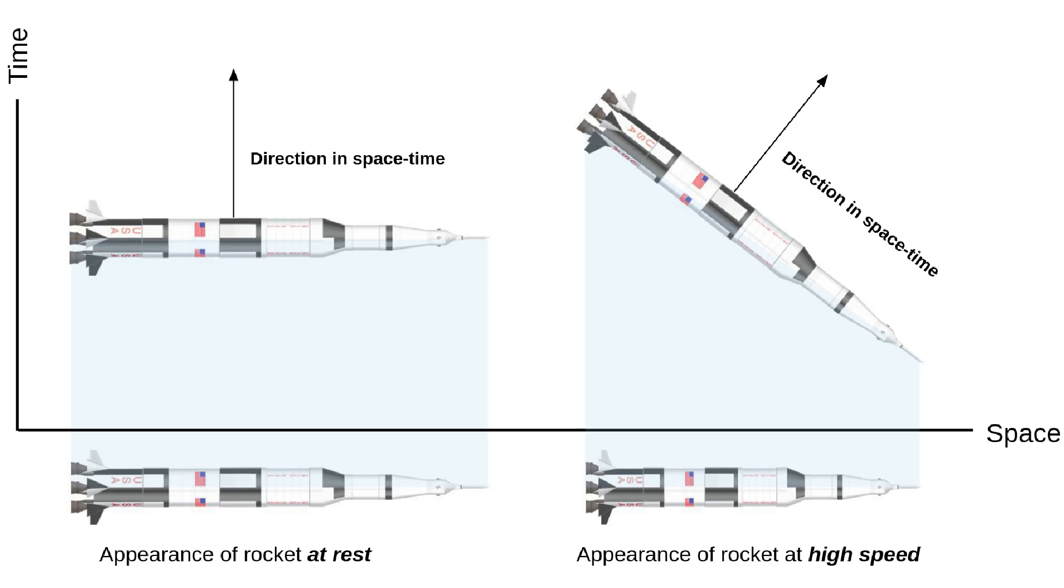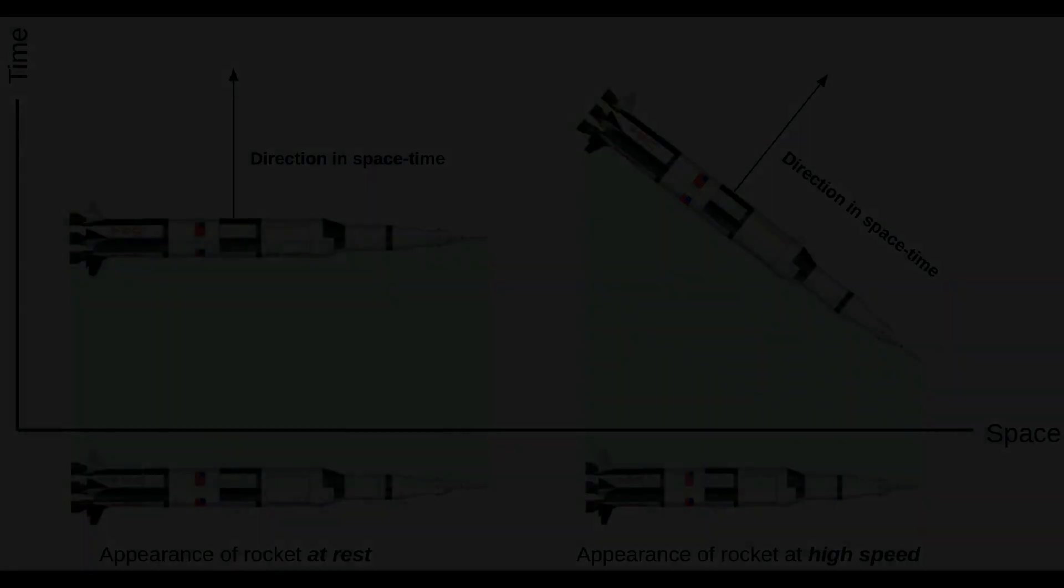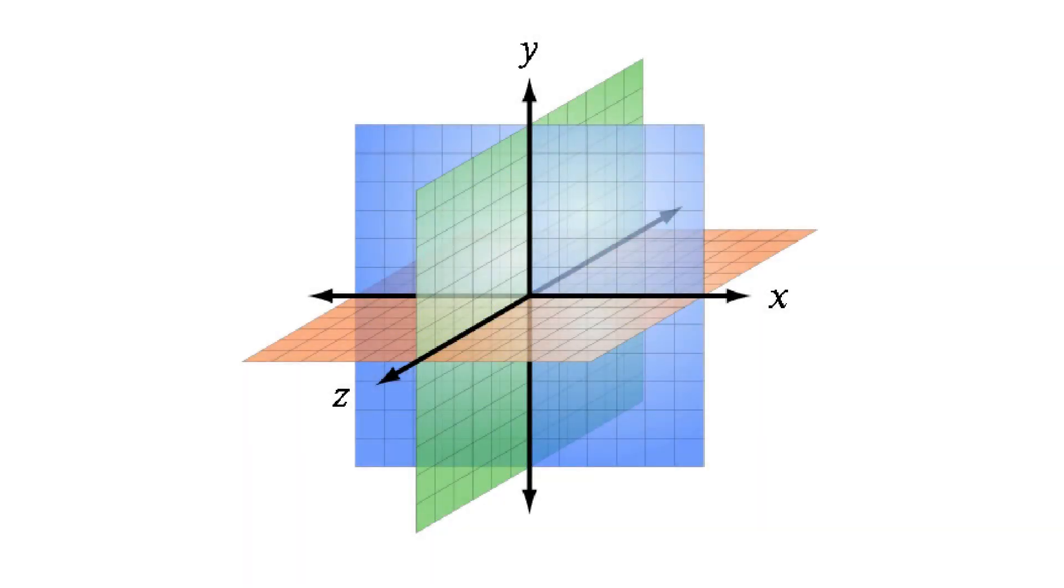So according to relativity in this space-time view, when the rocket is at rest it uses all of its length to reach through space. But when accelerated, it uses some of its length to reach through time. This suggests that space and time are measures of the same thing. All physical objects that reach through space, when in motion, reach through time. Time is just another dimension of space, like width, height, and depth. It is the fourth dimension. This is why physicists created the word space-time. Rather than treat time and space separately, it embodies the unified whole.